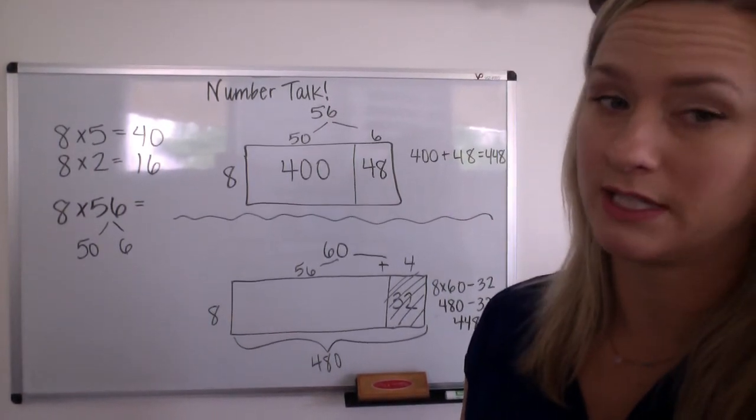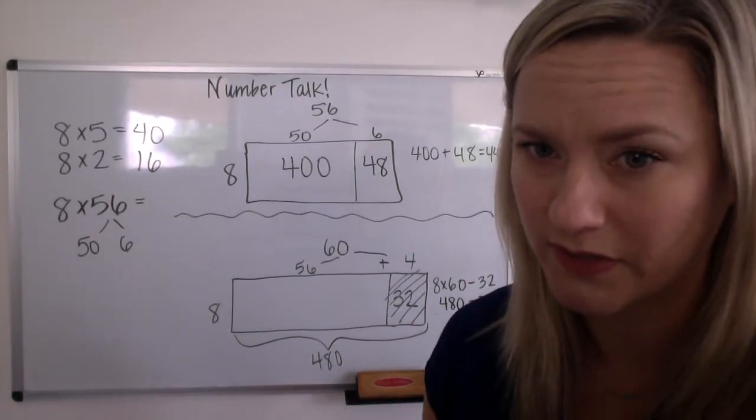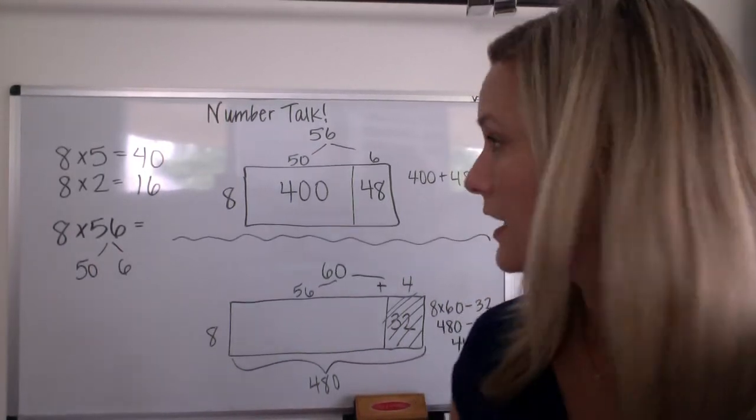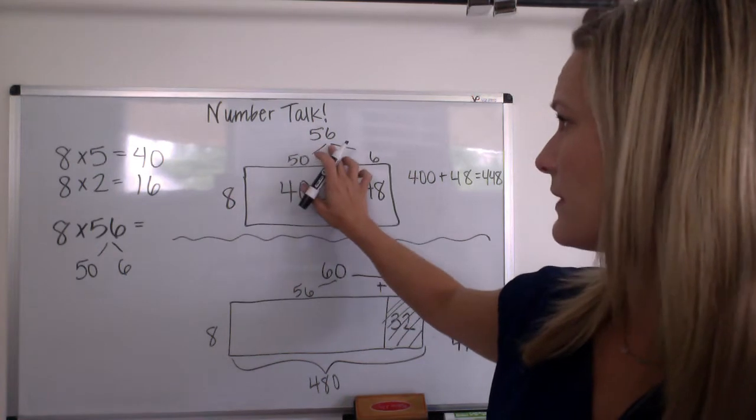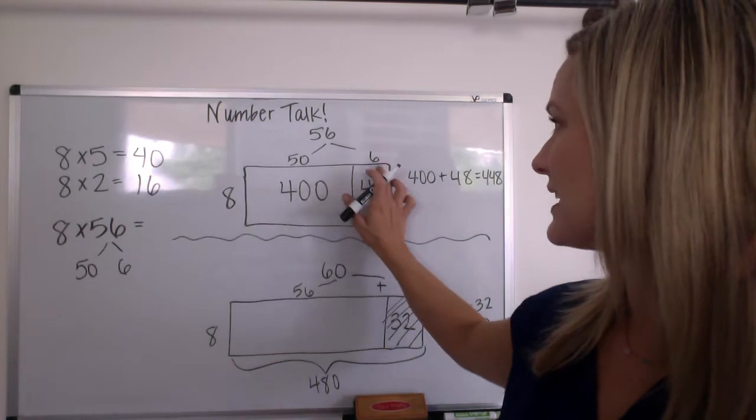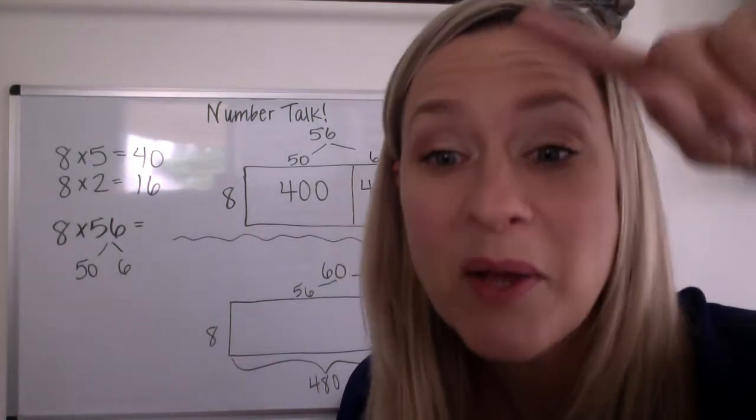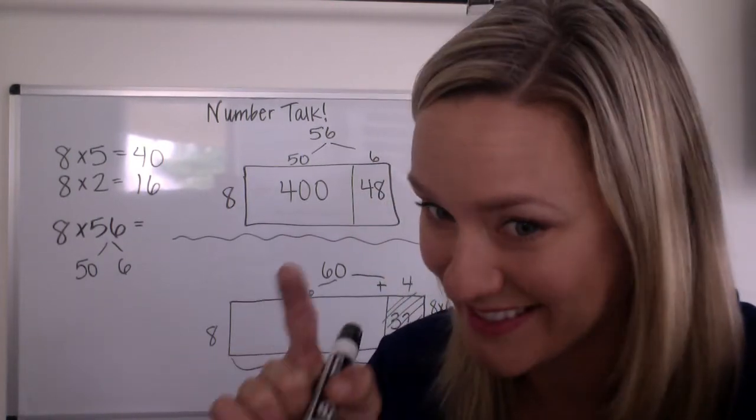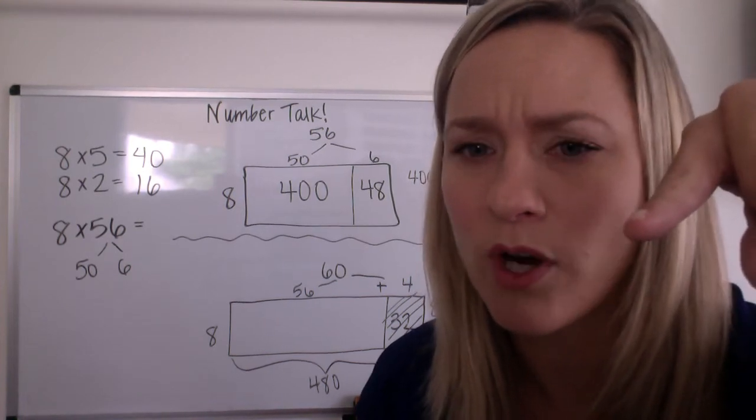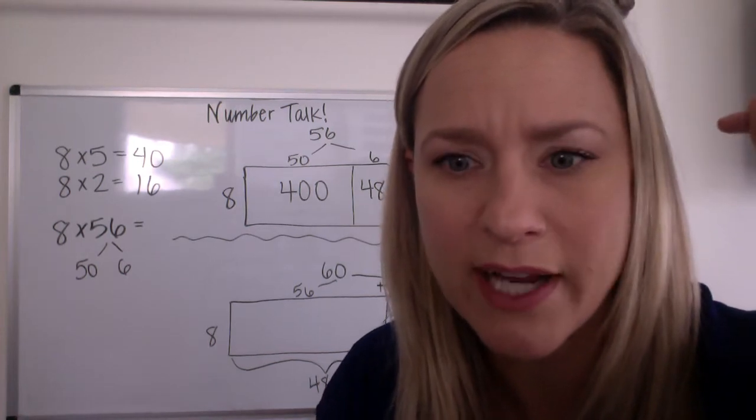I'm going to guess some of you probably did 10 times 56, and then took off two extra groups of 56. Did anybody do that? There are so many ways to think about this, right? I'm going to guess that most of you probably split the 56 into a 50 and a 6, and did eight times 50 is 400, and eight times 6 is 48. Guess what, kids? That's good news if you know how to do that, because that is what you have to know as a fourth grader. So that's lucky, right? That's the distributive property. Okay, we're getting ready for our lesson. So I'm going to erase all this stuff.